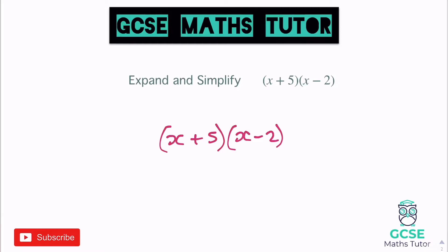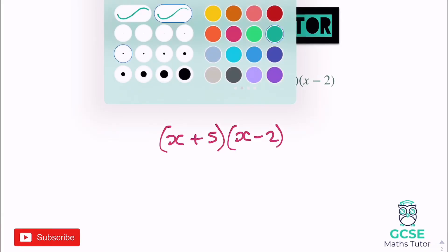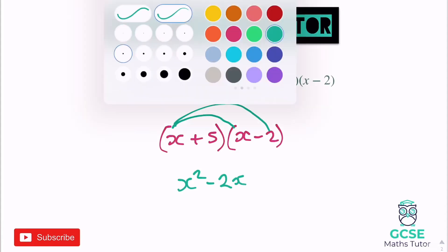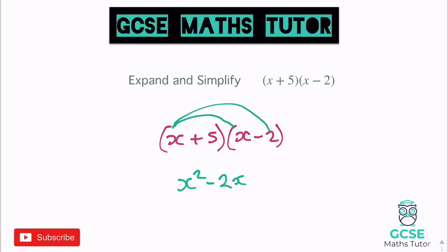Following the same process, I'm going to do x times x first — I always get that x squared piece at the start. So we get x squared, and then x times negative 2. Being careful this time because it is negative 2, so it's going to be negative 2x. Then positive 5 times x is positive 5x, and positive 5 times negative 2 — positive times a negative — makes negative 10.